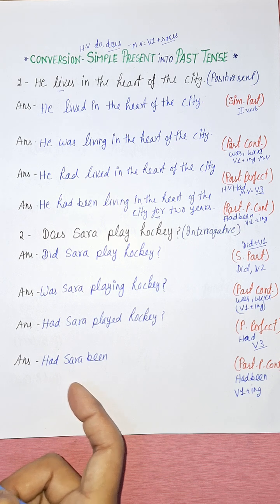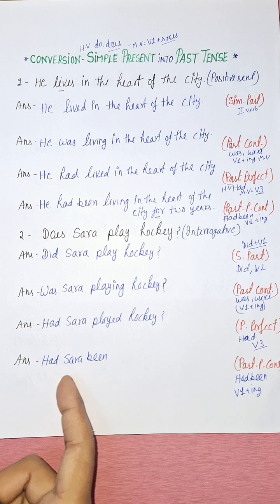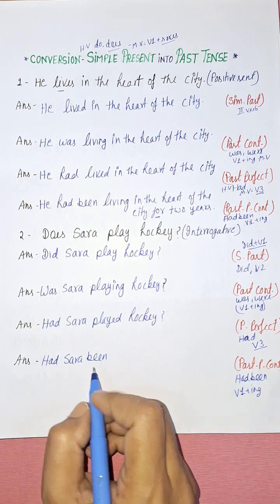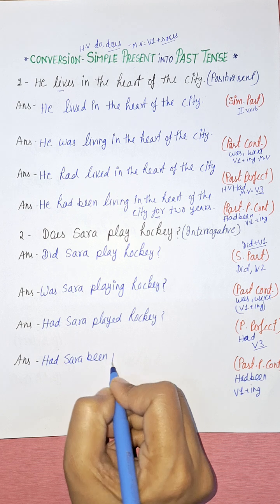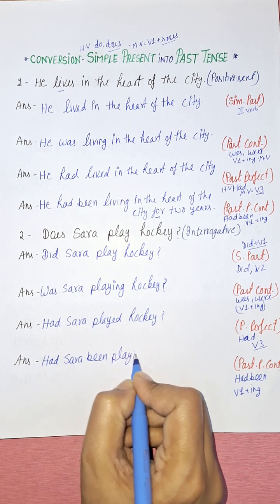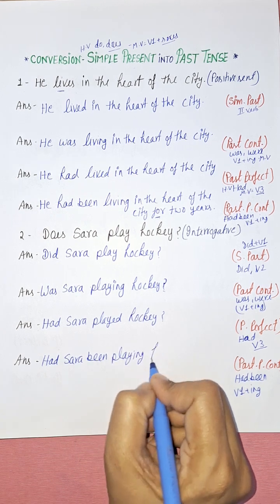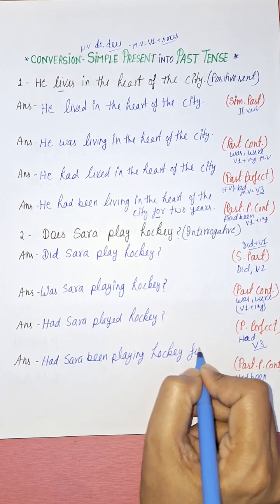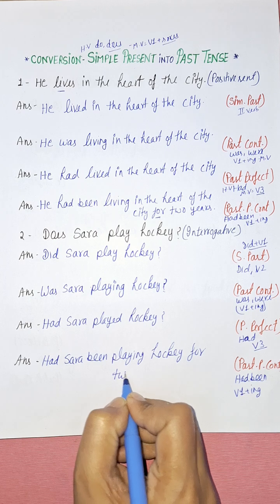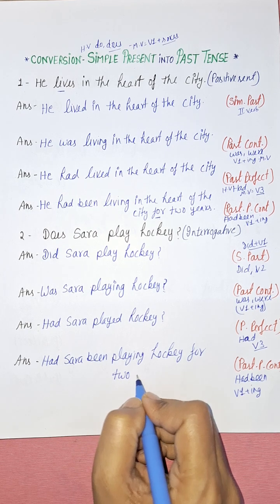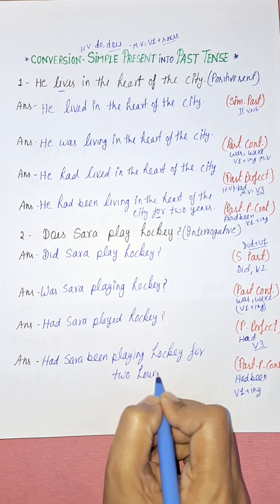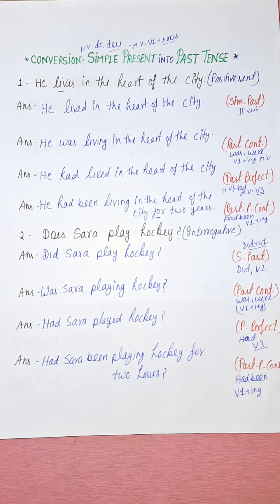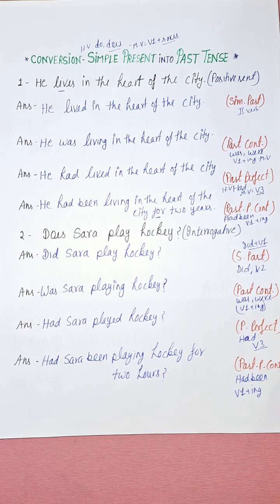For past perfect continuous interrogative, the structure is: 'Had Sarah been playing hockey for two hours?' So in this way you can convert a simple present positive or interrogative sentence into simple past, past continuous, past perfect, and past perfect continuous tense.